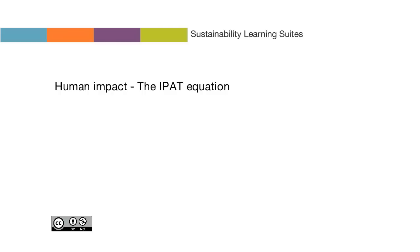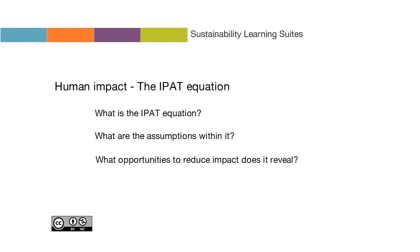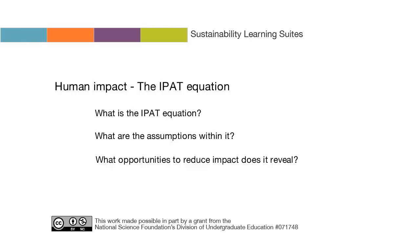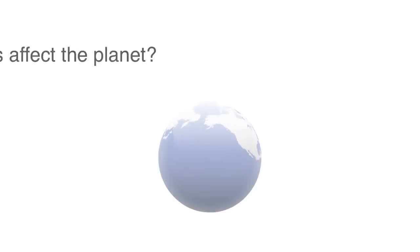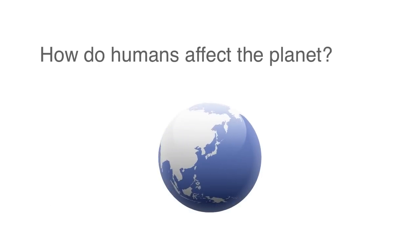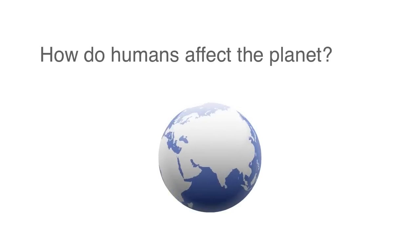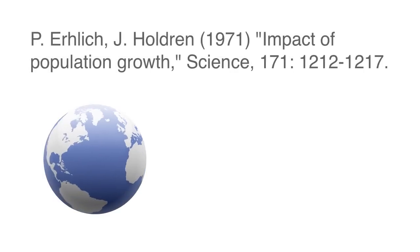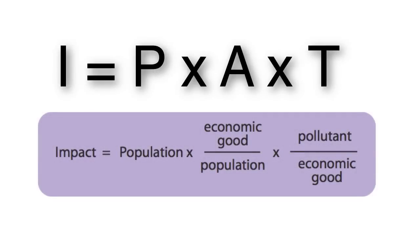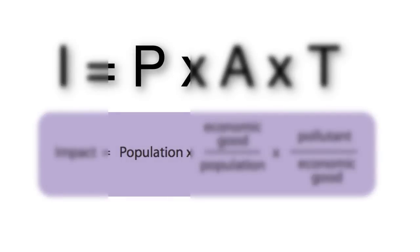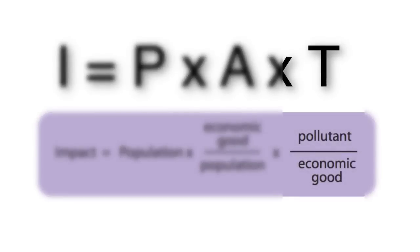What is the IPAT equation? What are the assumptions within it, and what opportunities to reduce impact does it reveal? These are the questions we'll be looking at in this video. In the early 1970s, scientists in the United States were attempting to calculate the impact of humans on the environment. One of the methods proposed by Ehrlich and Holdren is called the IPAT equation, in which environmental impact was proposed to be a product of population, the affluence of the population, and technology.